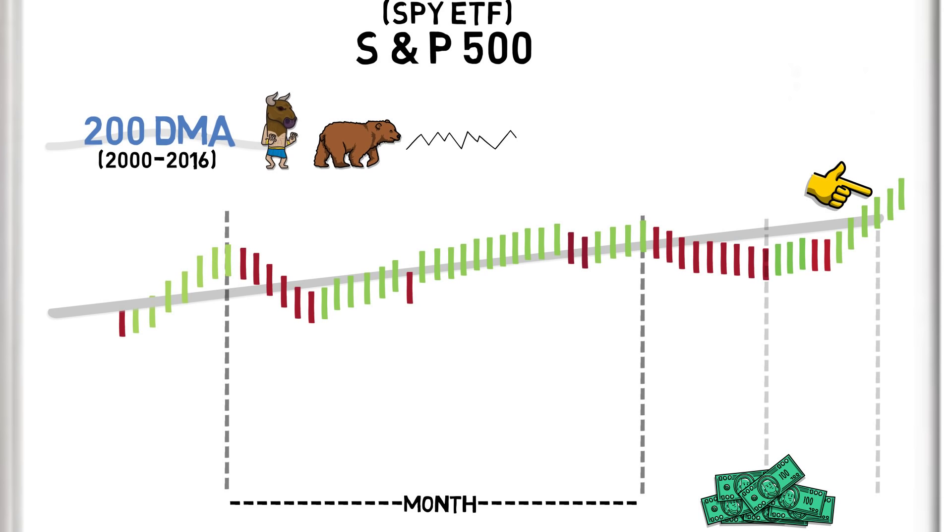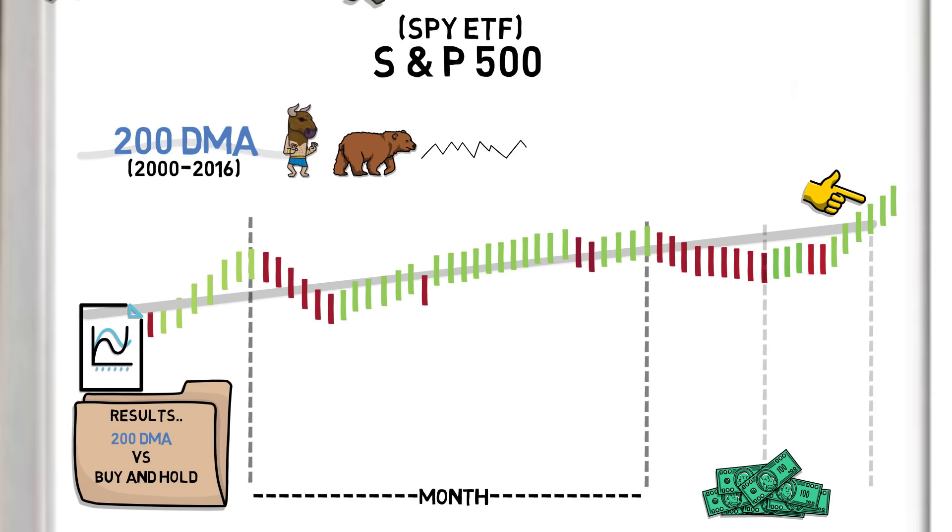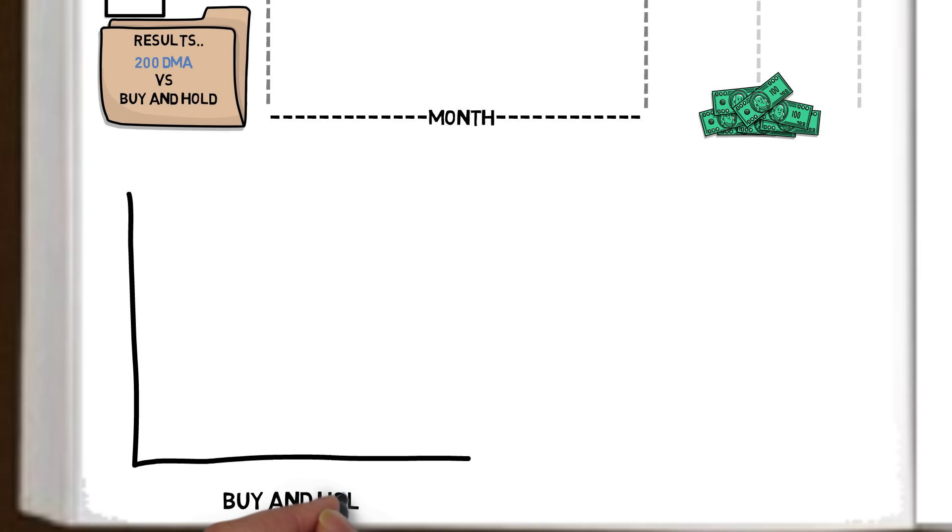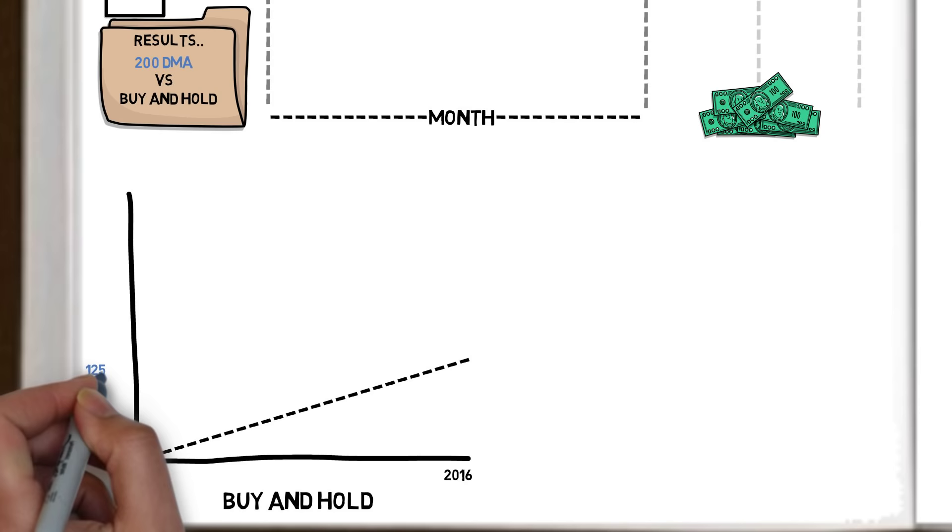The back-tested results of this simple moving average index tracking strategy against a buy and hold strategy are remarkable. If we bought the S&P 500 index in 2000 and simply held it until 2016, we would have seen a total gain of 125.2%, accompanied by a maximum drawdown of 55.2%.